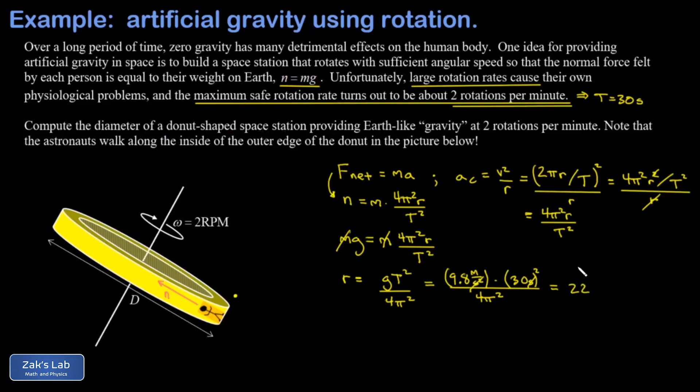Keeping a little extra precision here, I get 223.4 meters for the radius. In the problem, we were asked for the diameter of this donut-shaped space station, so I have to double that result. Rounding the final answer to three significant digits gives me 447 meters.